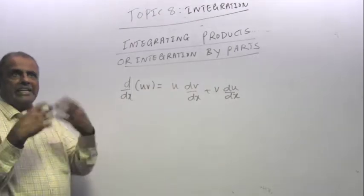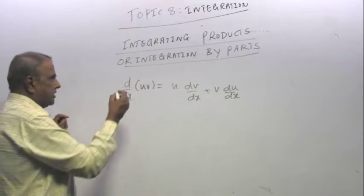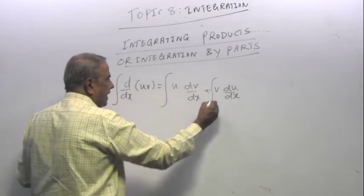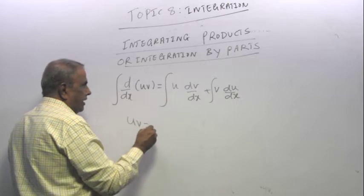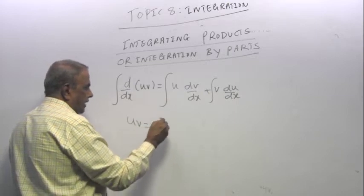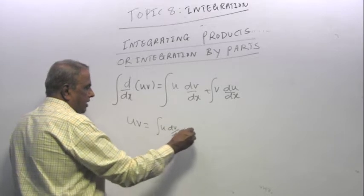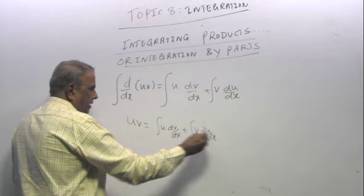Remember, when you integrate a differential, you come across the original question. Suppose I put an integral here, an integral here, and an integral here. So I get uv equal to integral u dv/dx plus integral v du/dx.